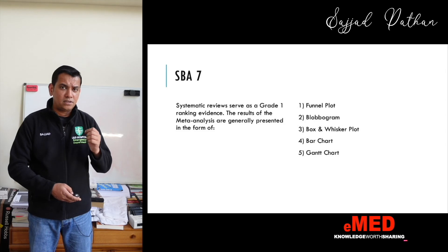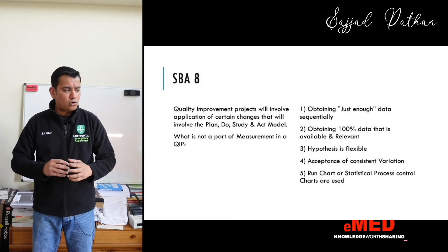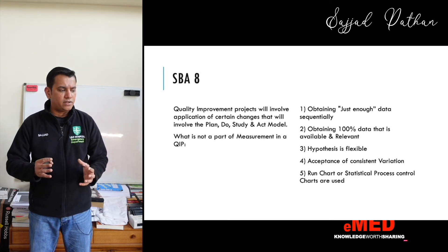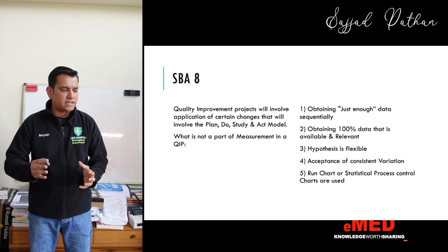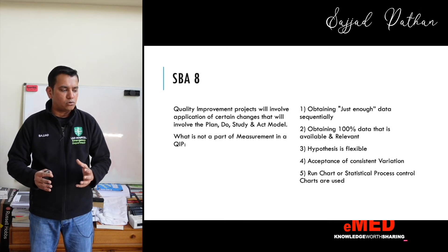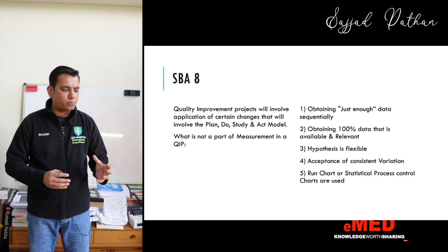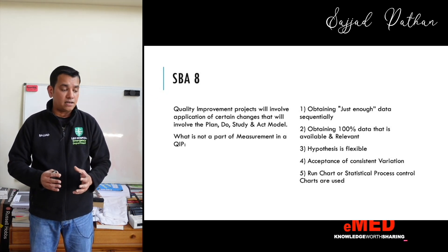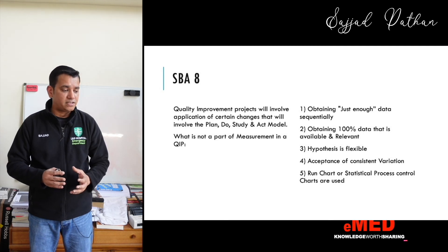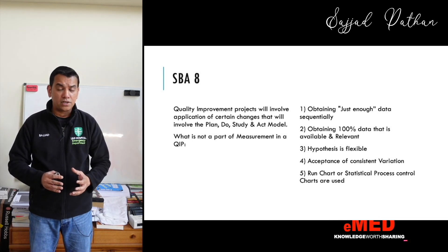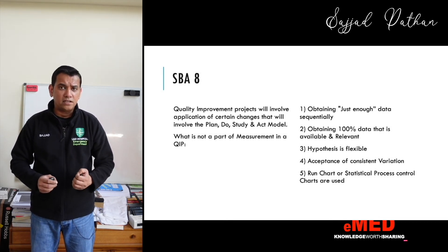Question eight: quality improvement projects involve application of changes using the Plan-Do-Study-Act model. What is NOT a part of measurement in a quality improvement project? Options: obtaining just enough data sequentially, obtaining 100% of data that is available and relevant, hypothesis is flexible, acceptance of consistent variation, or run chart / statistical process control charts are used.